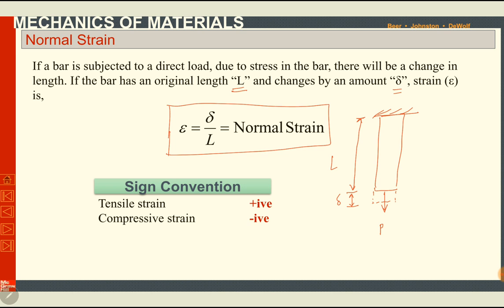If the load P is compressive instead of tensile, there can be a negative delta and the strain will be negative. If the strain is tensile, it will be positive; if it is compressive, it will be negative. Due to tensile strain we have an increase in length, and due to compressive strain we get a decrease in length.